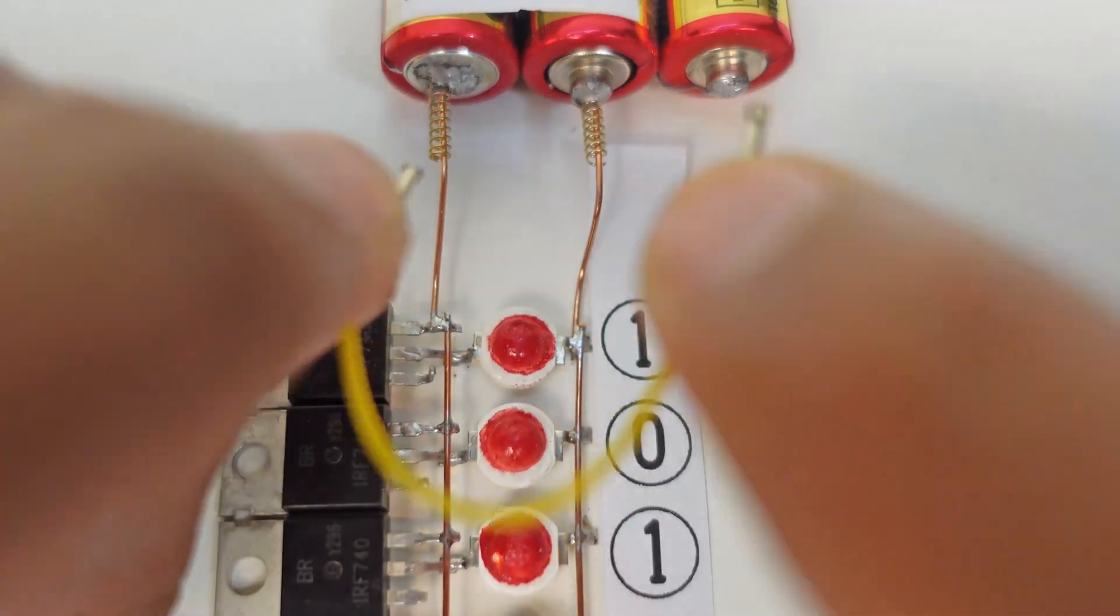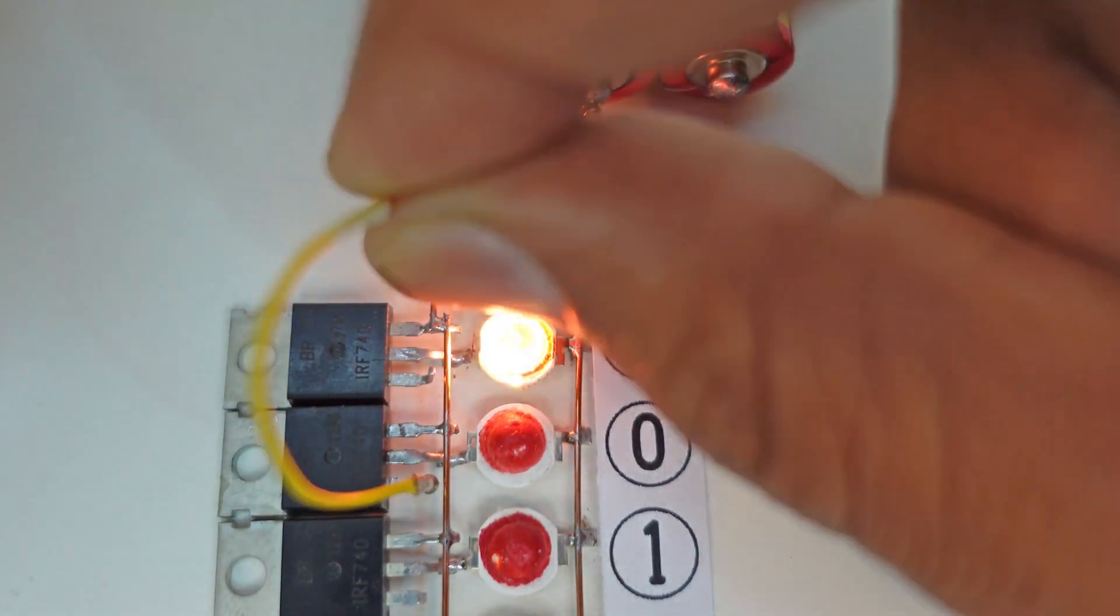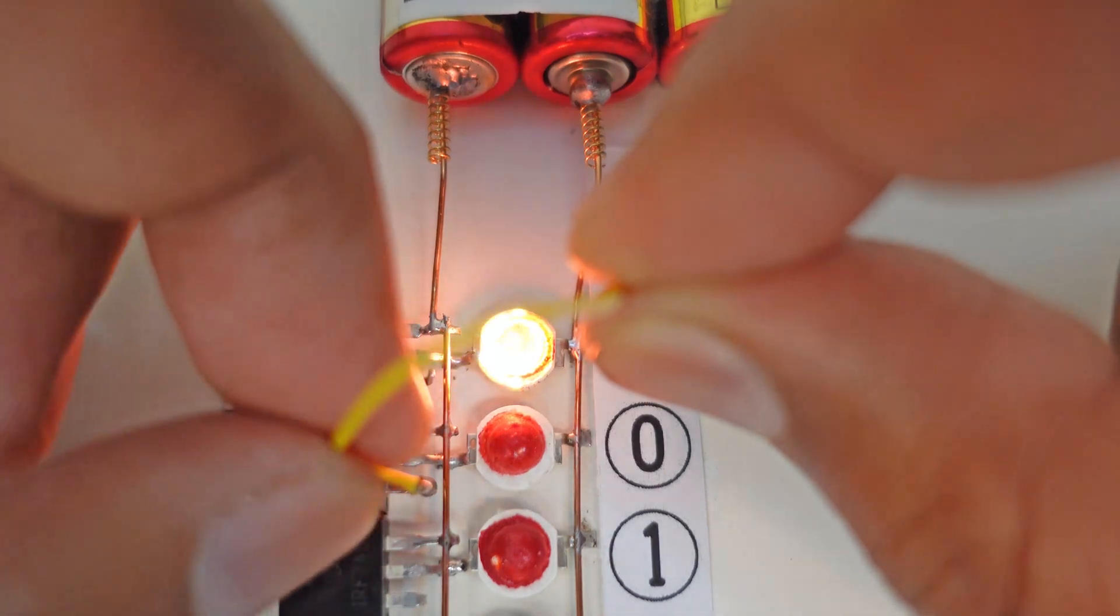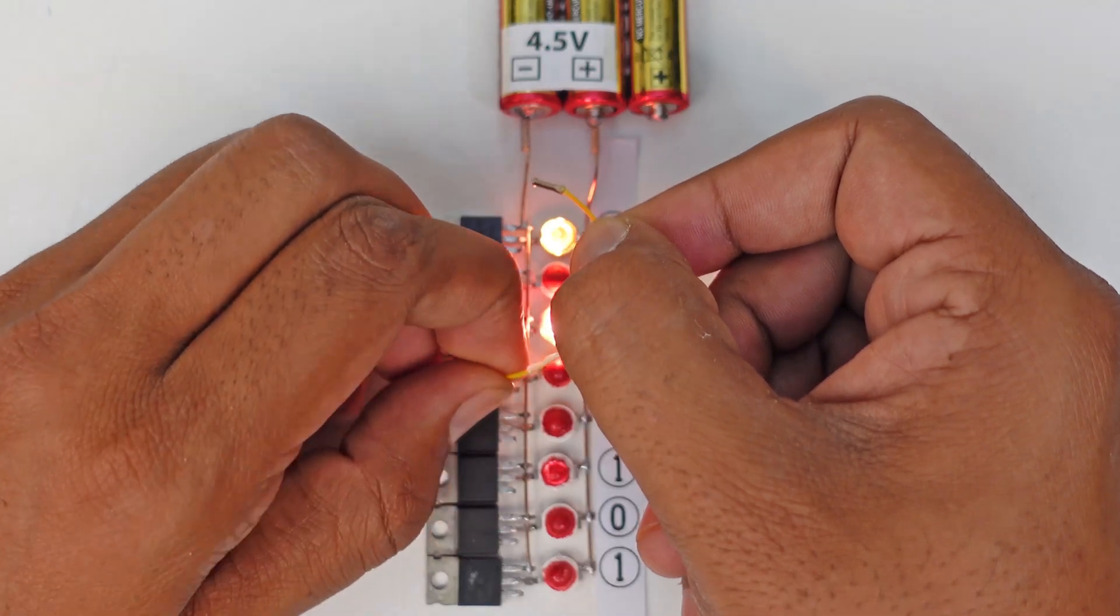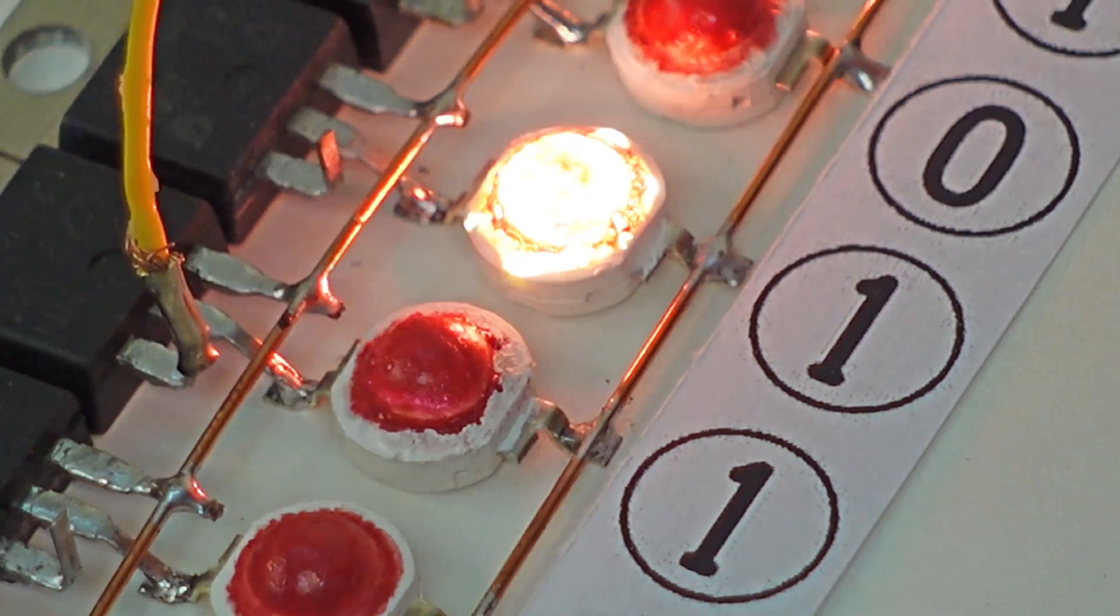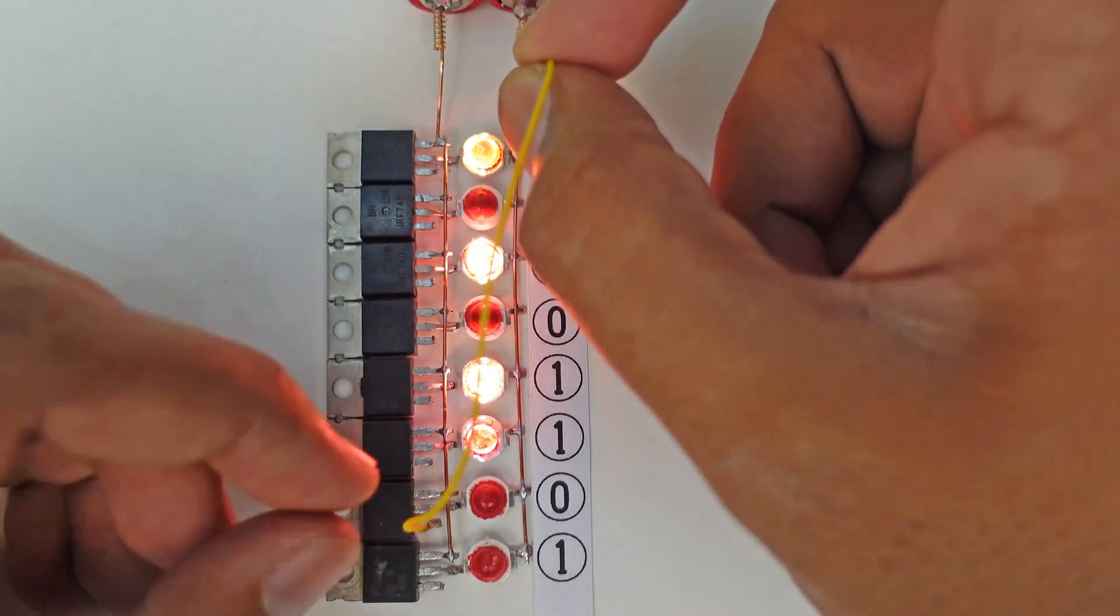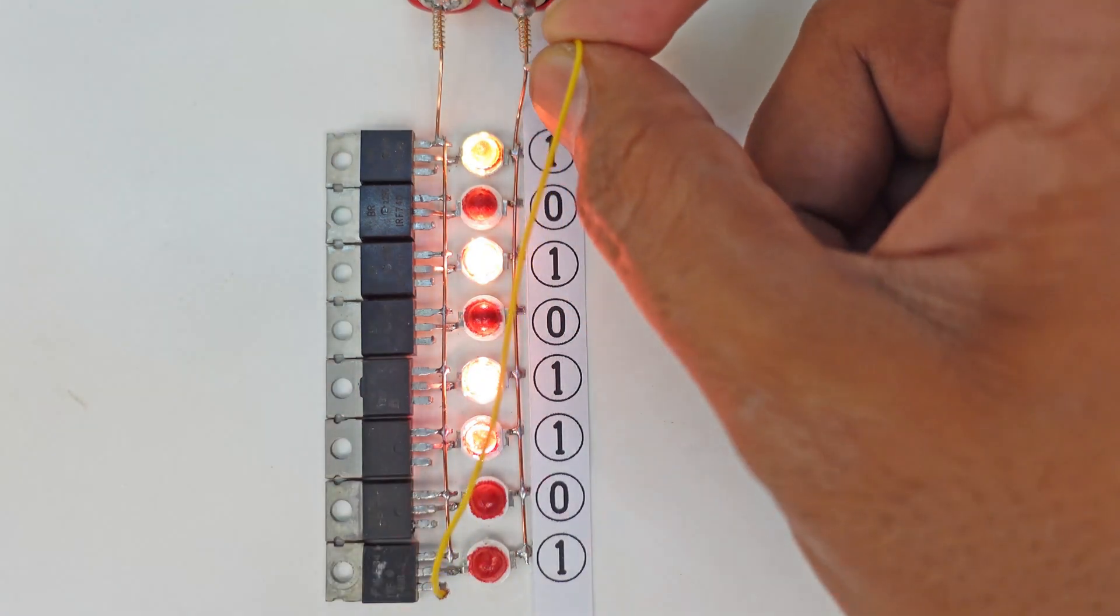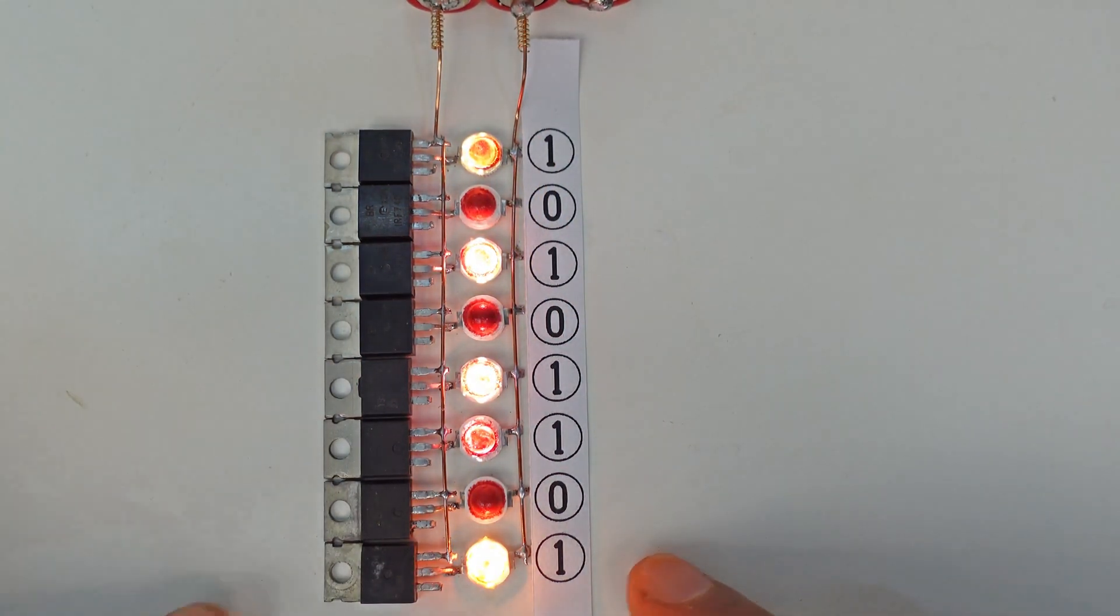The first bit is one, we turn the switch on. The second bit is zero, we turn off the switch. The third bit is one. The fourth bit is zero. The fifth bit is also one. The sixth bit is also one. The seventh bit is zero. And the eighth bit is also one. We have successfully saved our one byte data in this flash memory.